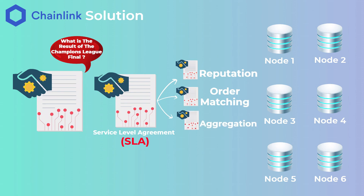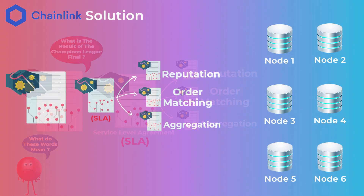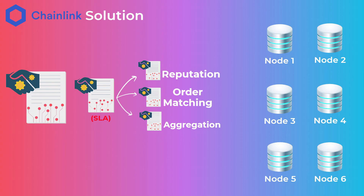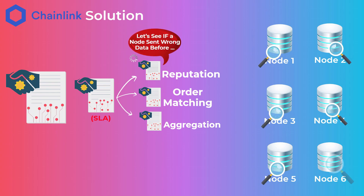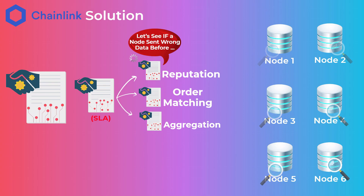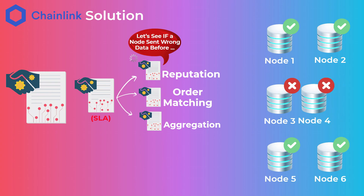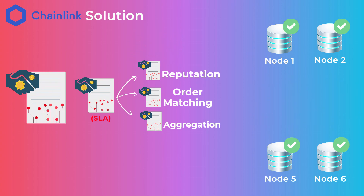These terms may sound confusing, but we'll explain them simply. The reputation contract checks the performance history of oracle nodes to see if they provided correct and honest data in the past. It eliminates untrustworthy nodes and creates a list of trusted, reliable nodes based on their previous performance.